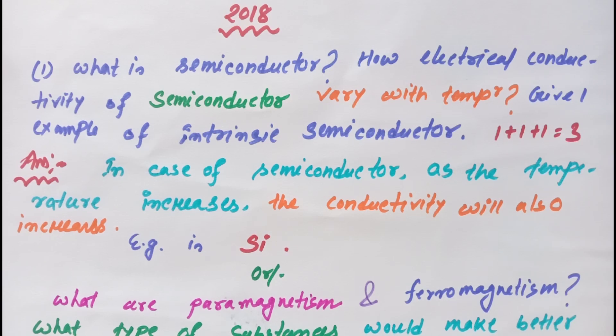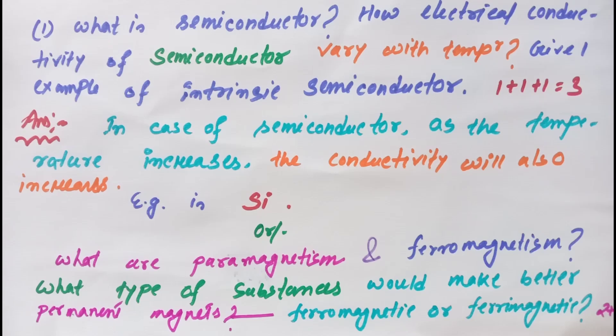One example of intrinsic semiconductor will be silicon. There is one another option of this question. The option is: What are paramagnetism and ferromagnetism?